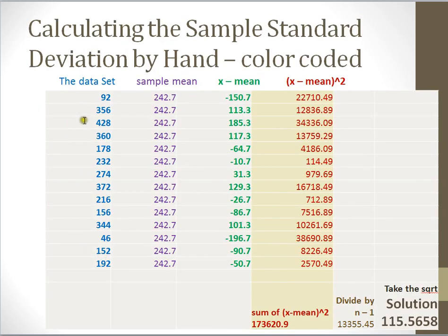Here's each one of the values from our data set. These are all of our x's. Here's the sample mean over and over and over and over again. Here's where I take the mean and subtract it from x. So 92 minus the mean is negative 150.7. 356 minus the mean is 113.3, and so on. In other words, I took every single value in the data set and subtracted the mean just from that value, and that's what's here in this column.